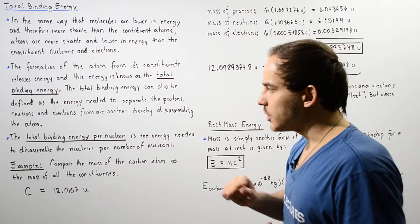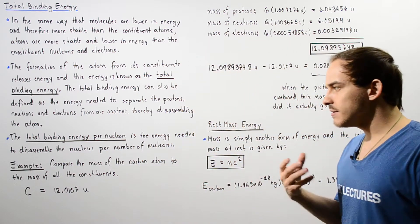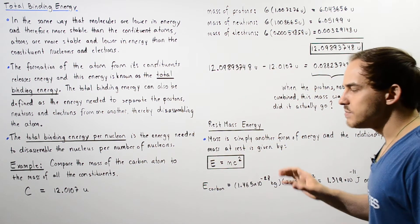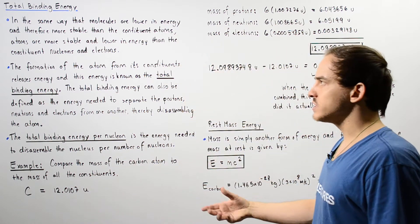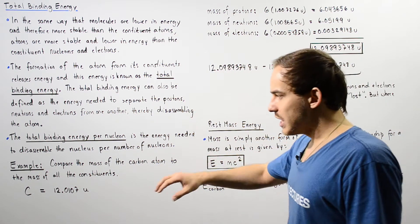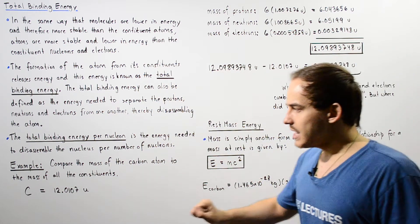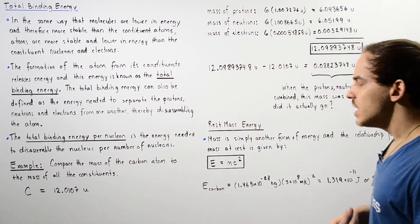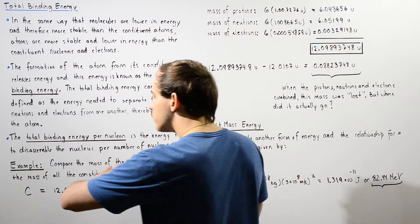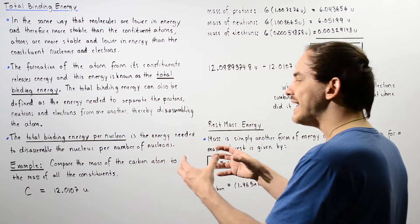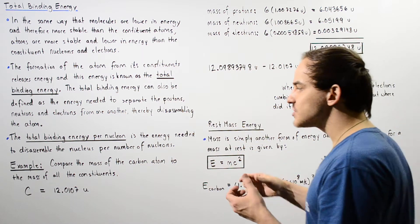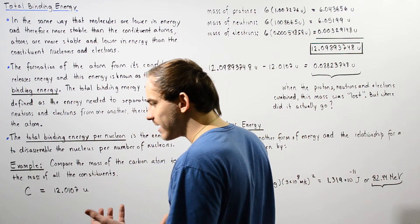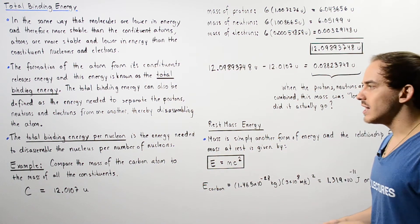Let's look at the following example in which our goal is to compare the mass of the carbon atom as described by the periodic table and the mass of the individual constituent protons, neutrons, and electrons. If we examine the periodic table, we see that a single carbon atom has a mass of 12.0107 unified atomic mass units. This is the mass of our atom when it is actually formed. In a neutral carbon atom, we have six protons, six neutrons, and six electrons.